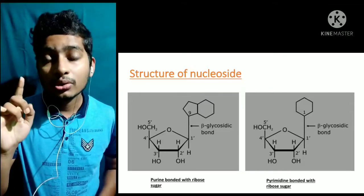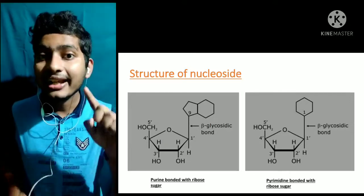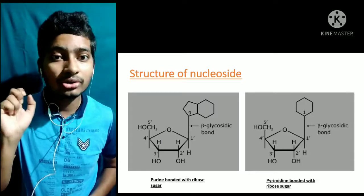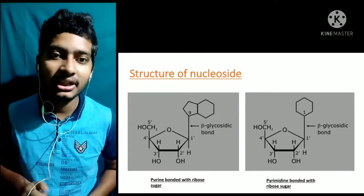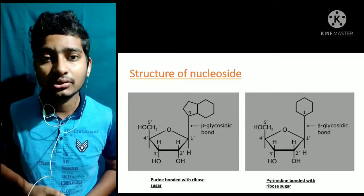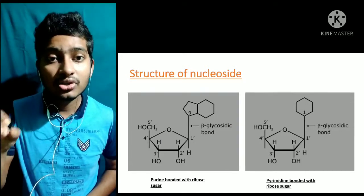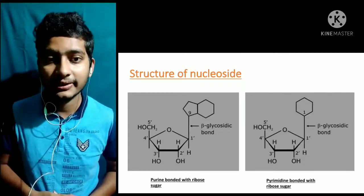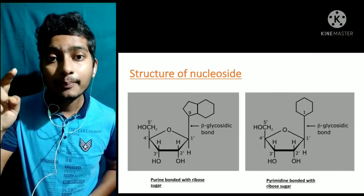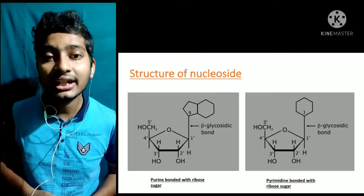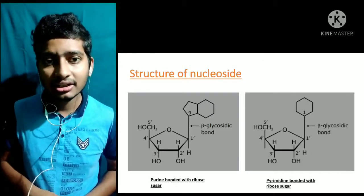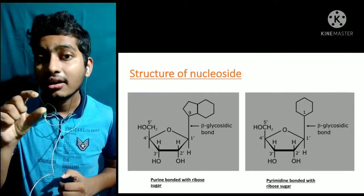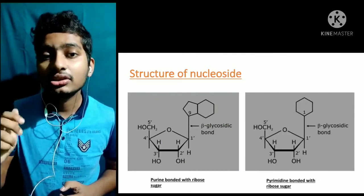Purine में 9th number nitrogen, sugar के 1st number carbon के साथ bond बनाता है — इसमें condensation reaction होता है, जिसमें ribose sugar का OH group और H मिलकर water remove हो जाता है। उसी तरह pyrimidine अपने 1st number nitrogen से ribose sugar के साथ bond बनाता है। तो nucleoside = sugar + nitrogenous base, joined by a beta-glycosidic bond.